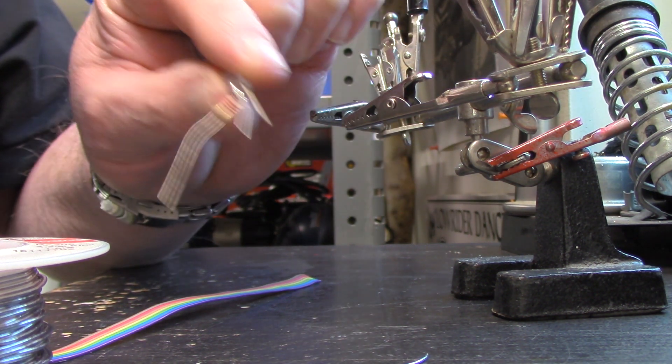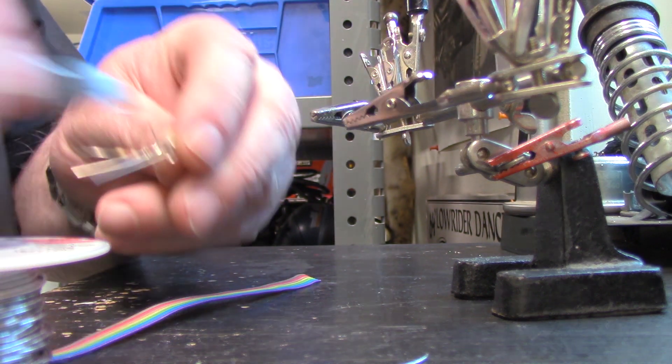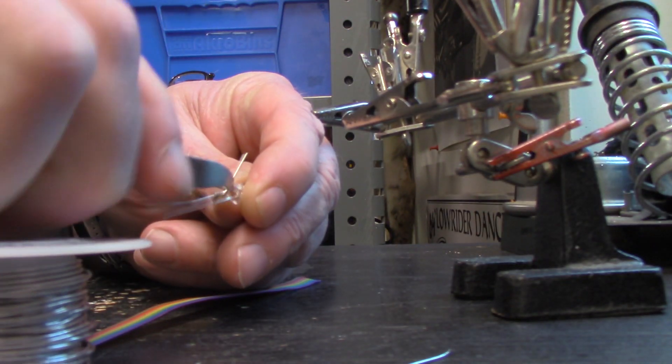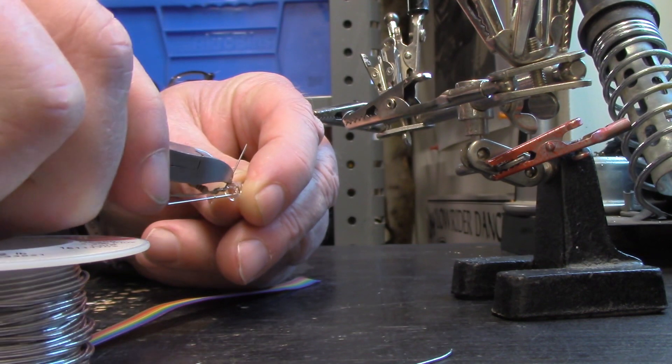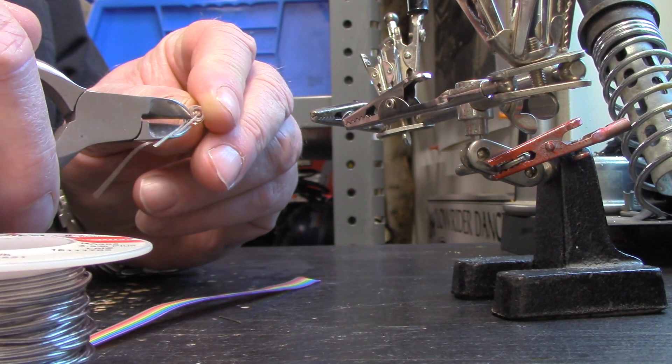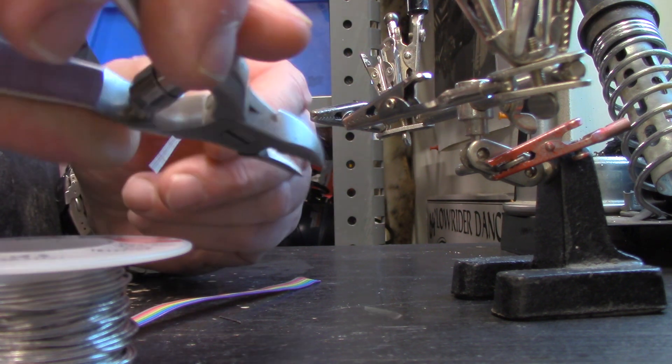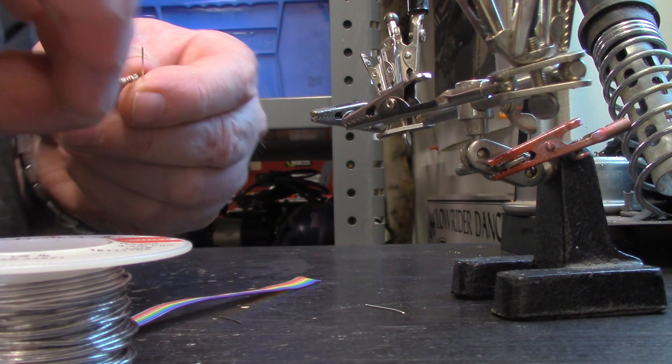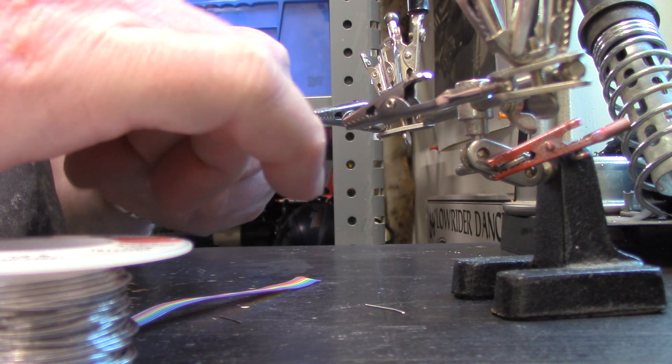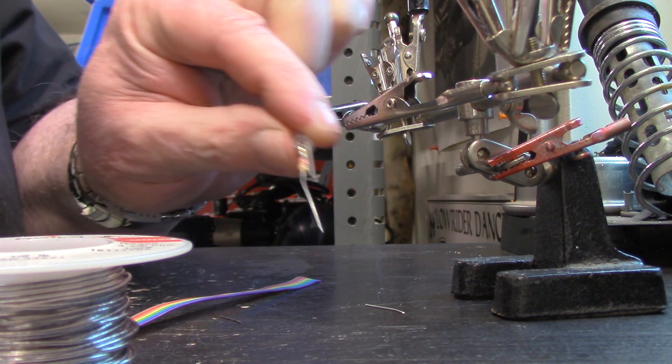Now once this is done and it's cooled down a little bit you can go ahead and cut those leads off and I'm gonna just trim them off right now. And once these leads are trimmed off now you're left with a resistor soldered on to the LED positive side.